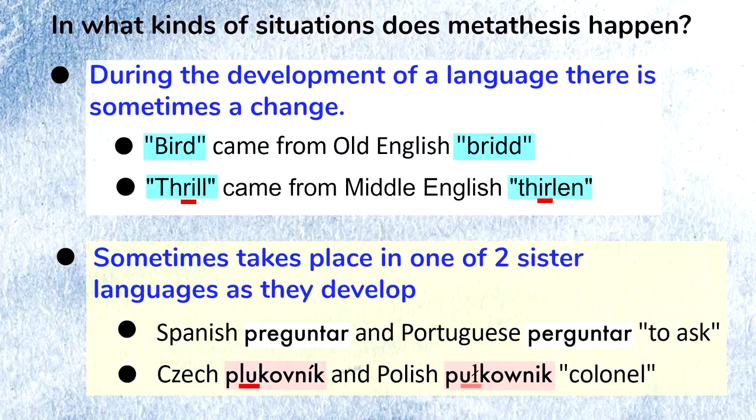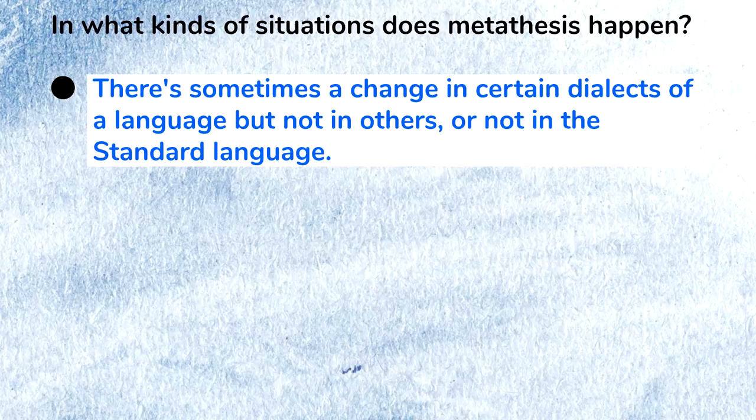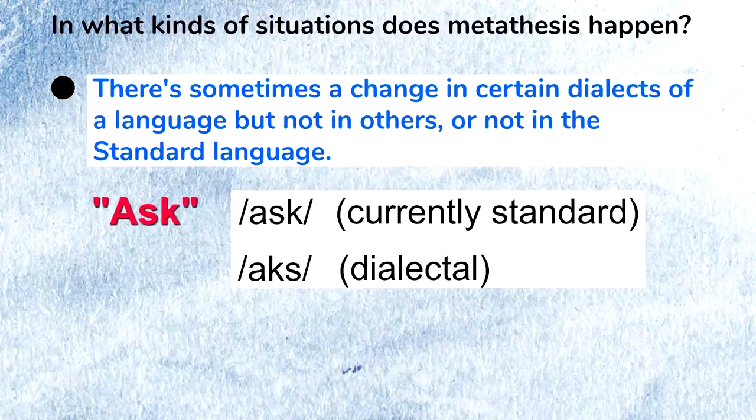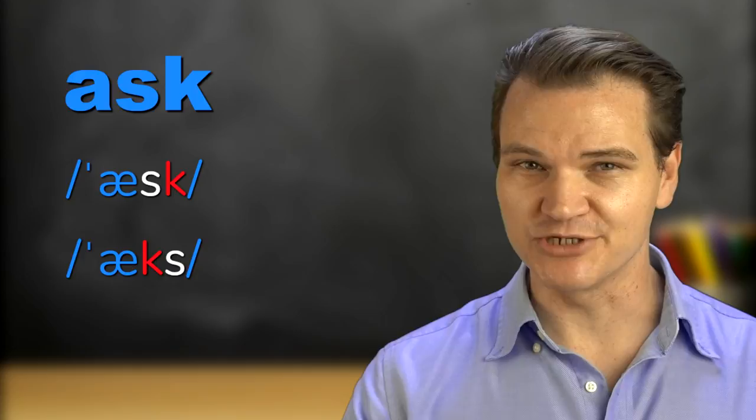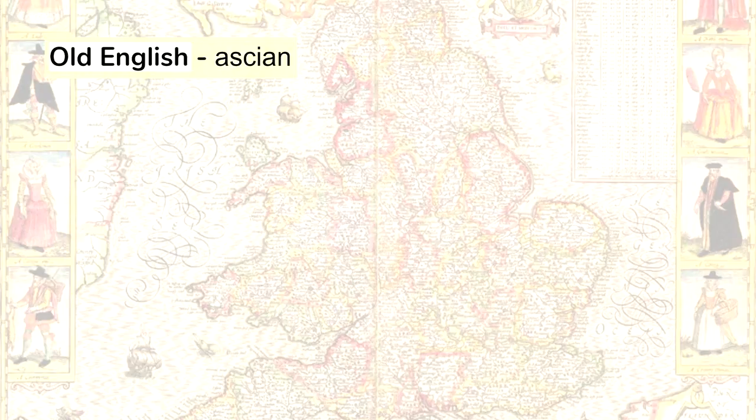Similarly, there's sometimes a change in certain dialects of a language but not in others, or not in the standard language. This is like we saw in the example of 'ask' versus 'axe'. 'Axe' is probably the most well-known example of metathesis, and it's often thought to be broken English or a mistake, but both 'ask' and 'axe' have been around for over a thousand years. There was Old English 'askian' as well as 'axian', which originated through metathesis.